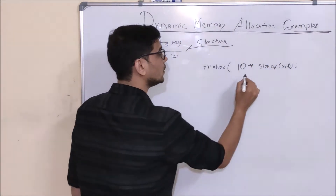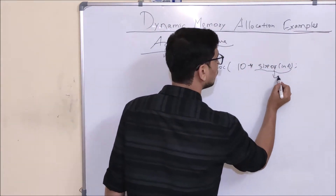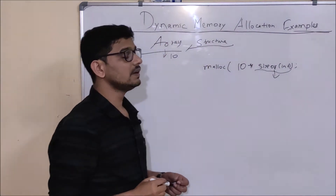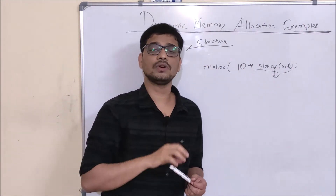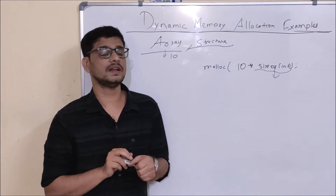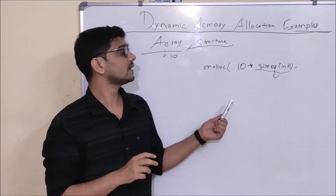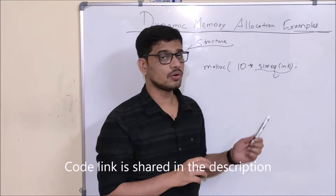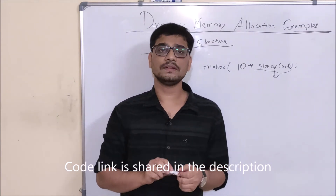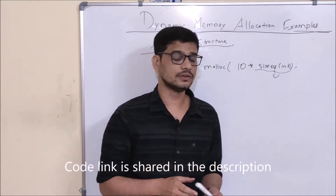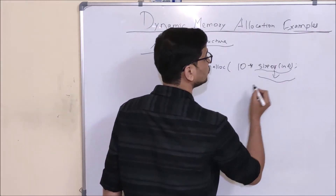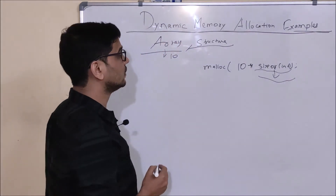You may be thinking, why sizeof(int)? Because integer will not always be 4 bytes — it is compiler and OS dependent. There can be a situation in some OS and some compiler where it can be more than 4 bytes or less than 4 bytes. So to be on the safer side, I am going to use sizeof(int).